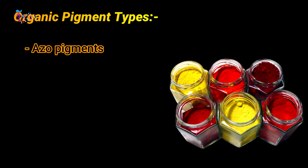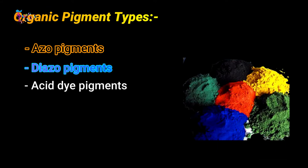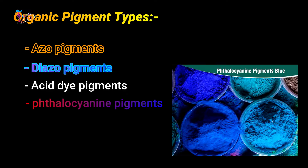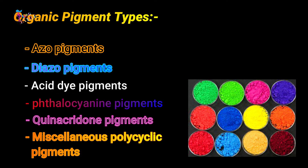The six types of organic pigments are: azo pigments, diazo pigments, acid dye pigments, phthalocyanine pigments, quinacridone pigments, and miscellaneous polycyclic pigments.